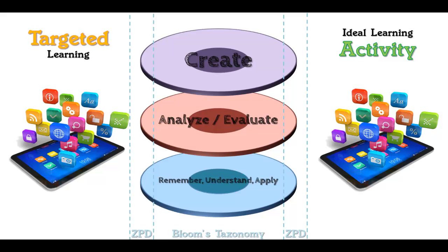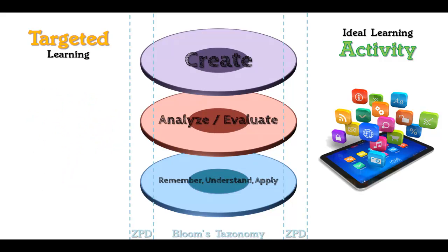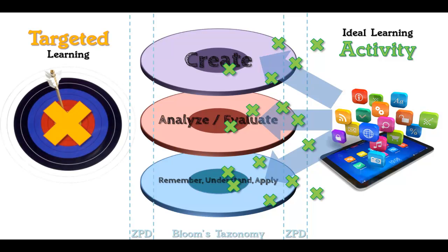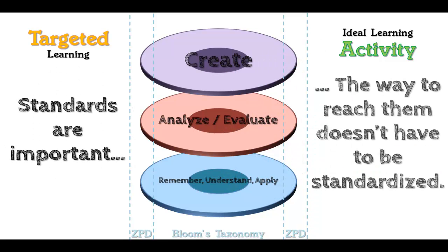Do you see how technology can be friend or foe here? Unless you're giving a computer science class, technology should not be the targeted learning per se. Technology makes an amazing creation tool — it's wonderful for analyzing and evaluating because it can help you organize information and see it from many different perspectives, and it's clearly unavoidable for reference nowadays. But it's also very important to take into account that different learners will have different ZPDs. There's no reason to ask everyone in a classroom to produce the same thing, the same way, using the same tools. The same target — yes, of course. Same way to get there? Why? Standards are important. The way to reach them doesn't have to be standardized.